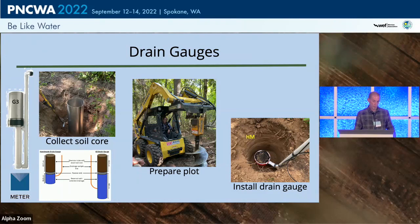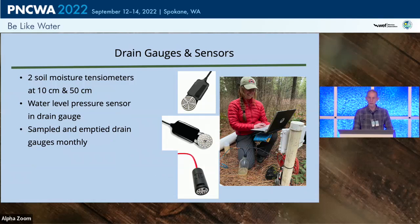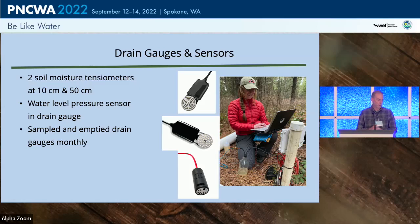We had three drain gauges at each of the five facilities for a total of 15. We needed to understand how drainage extrapolated to the other plots, so we used hydrologic models to predict drainage from the drain gauge measurements. Each unit had tensiometers at 10 cm and 50 cm and a pressure sensor in the reservoir. Data loggers were downloaded and reservoirs sampled for nutrients and emptied monthly.